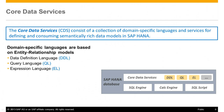The Core Data Services, short CDS, is a collection of domain-specific languages and services for defining and consuming semantically rich data models in HANA. The domain-specific languages are based on entity relationship models and mainly comprise a data definition language, a query language, and an expression language.